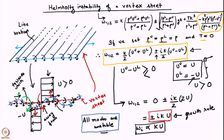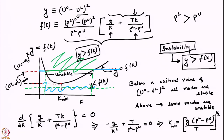With this background it is now possible to understand why we got only a band of unstable wave numbers in the Kelvin-Helmholtz model when we had two different fluids. This particular analysis is the Helmholtz instability of a vortex sheet with only a single fluid, so there is no contribution from gravity and no contribution from surface tension. The vortex sheet would also predict that all Fourier modes are unstable for two different fluids.